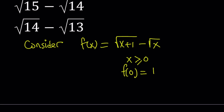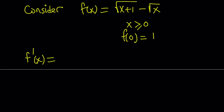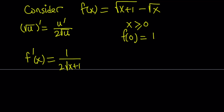Let's differentiate this function because my goal is to find a maximum or minimum and go from there. When you differentiate a radical function, the derivative of square root of u is u prime divided by 2 times the square root of u — that's the chain rule. In this case, x plus 1 is inside, so the derivative is 1 over 2 times the square root of x plus 1. And the derivative of the square root of x is 1 over 2 times the square root of x.